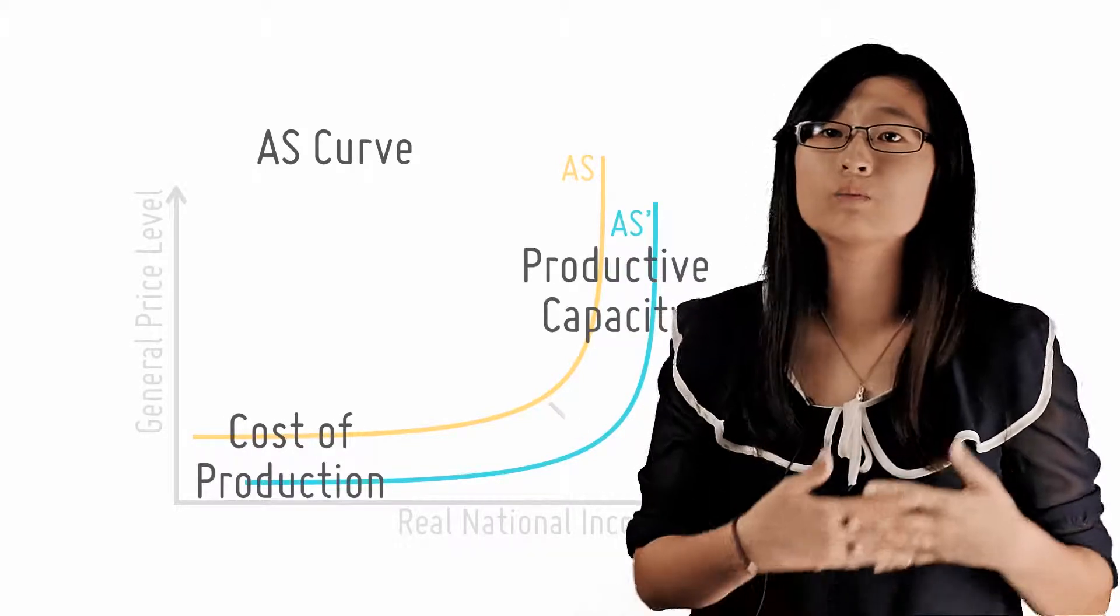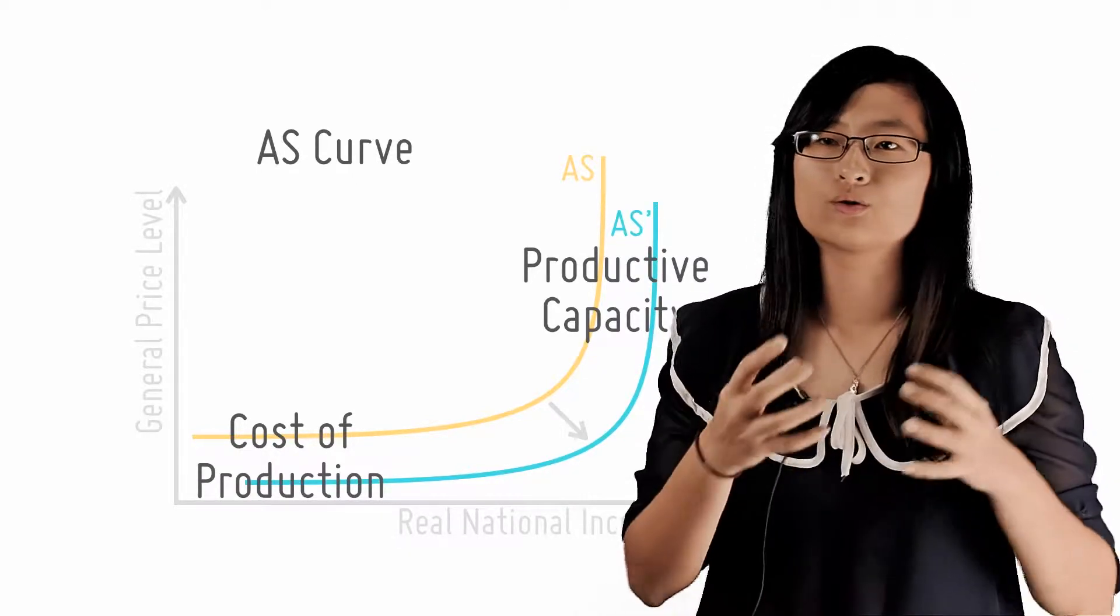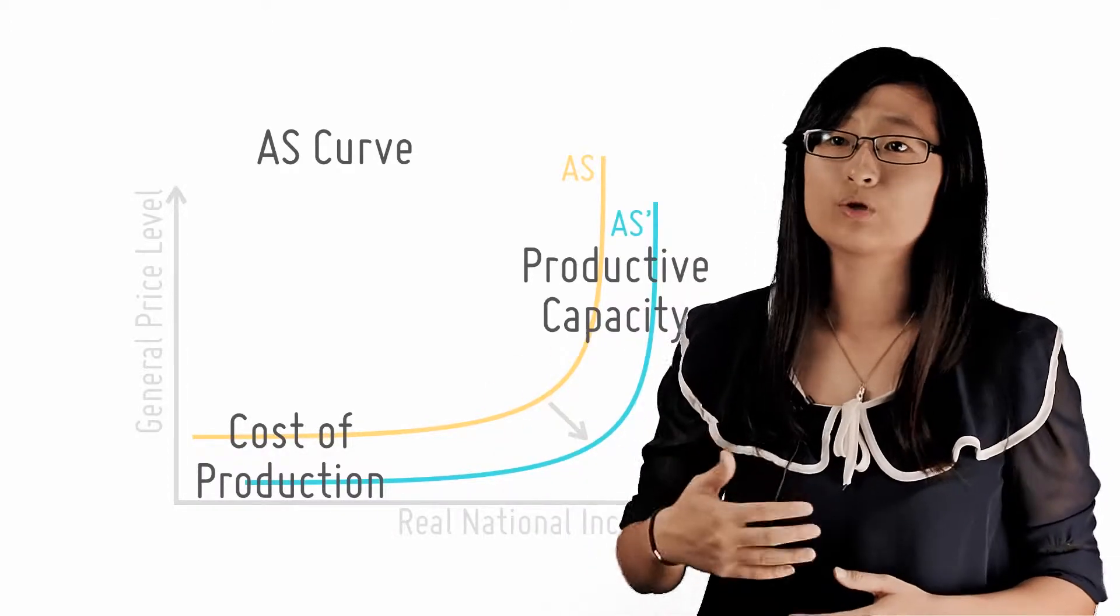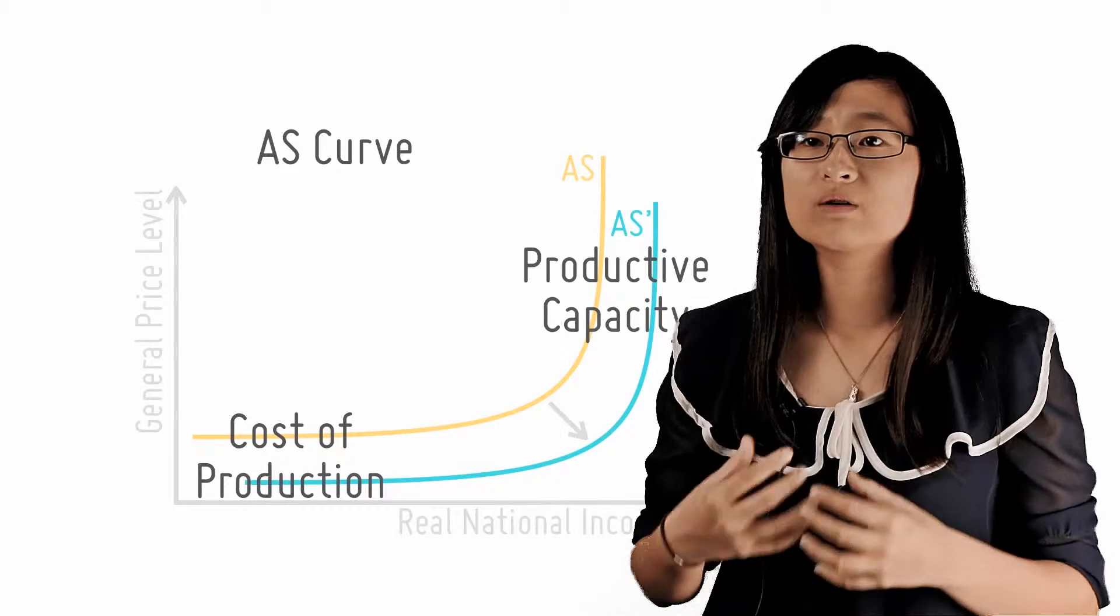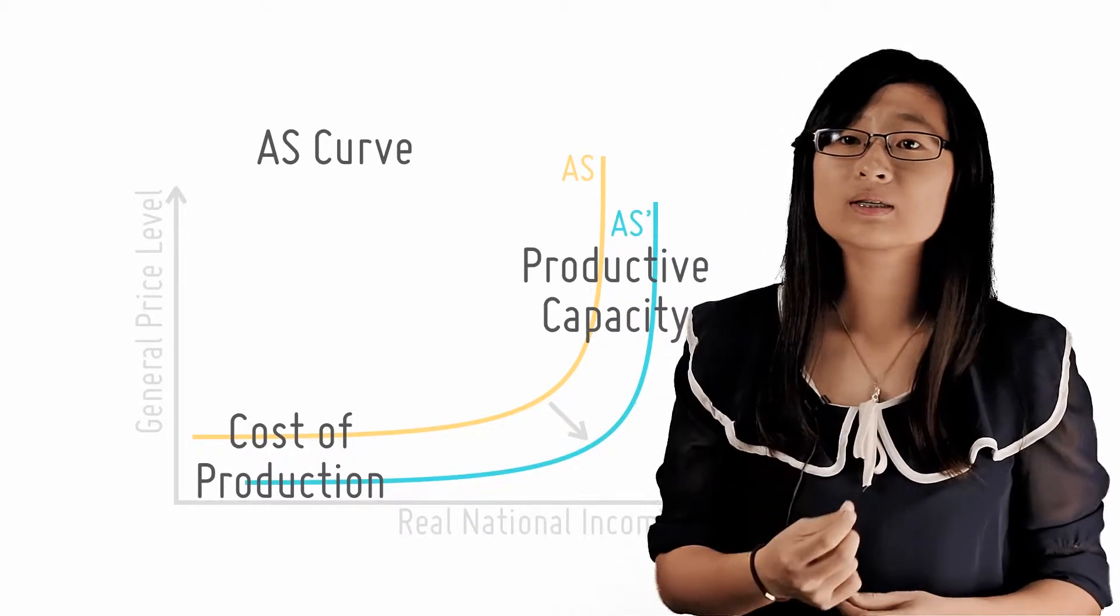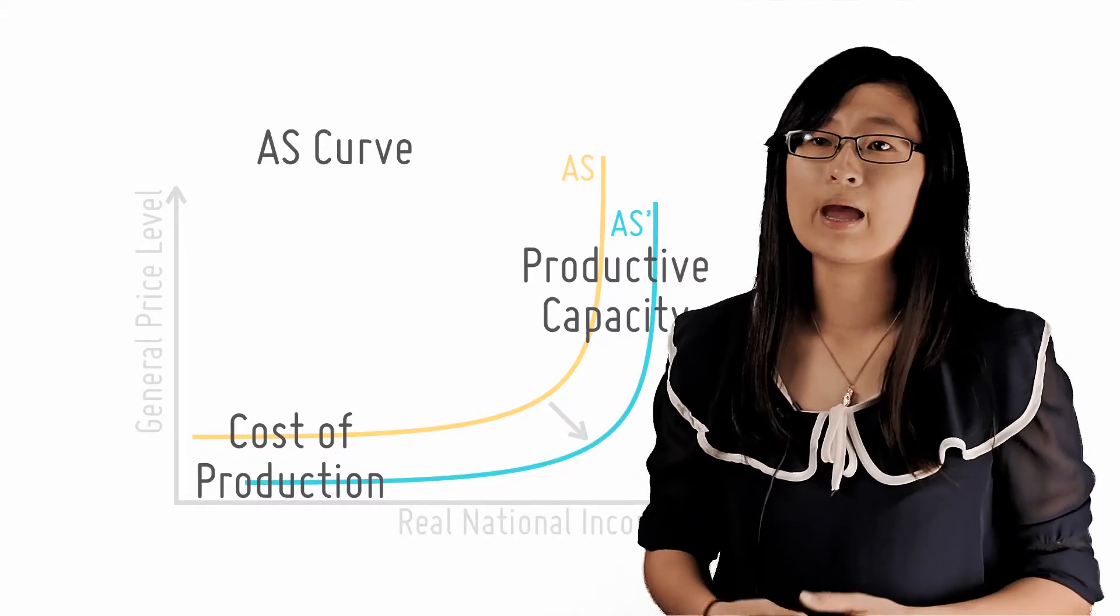The same factor can cause both movements. Hence, rather than trying to categorize every factor under the sun into things that shift the AS leftwards or rightwards and things that shift the AS upwards or downwards, we simply need to shift the curve accordingly. Ask yourself how the factors affect the cost of production and productive capacity and thus shift the curve in that manner.